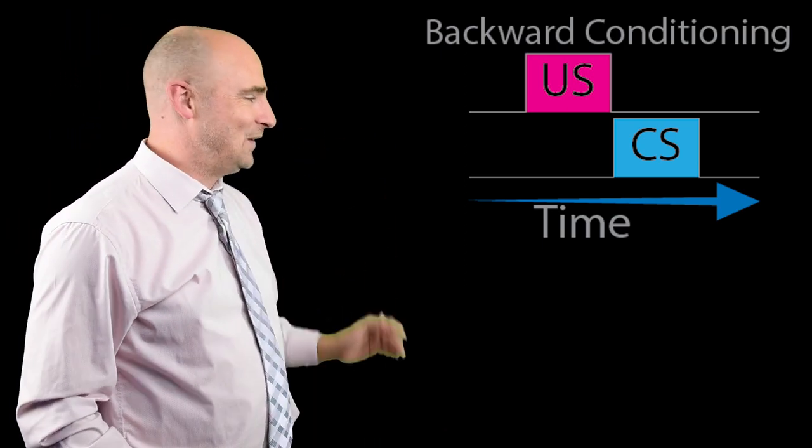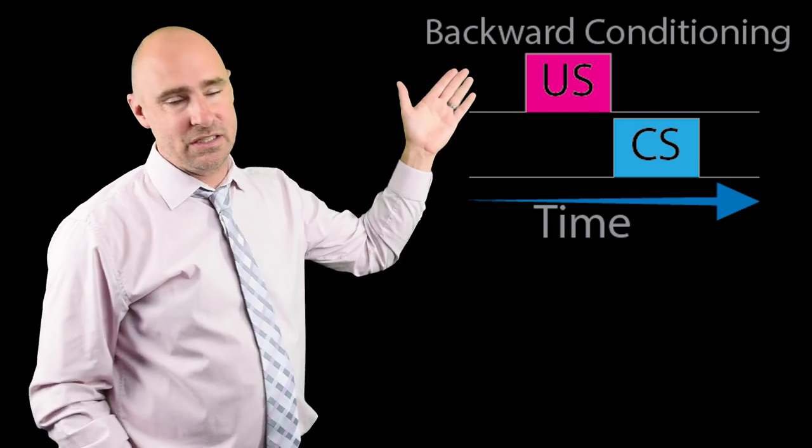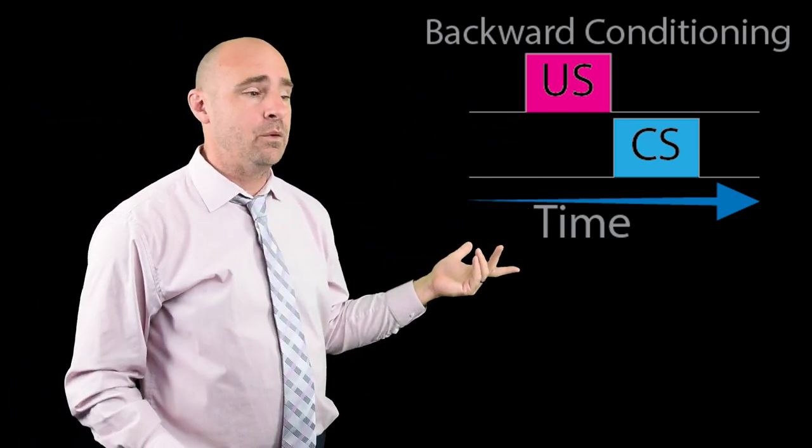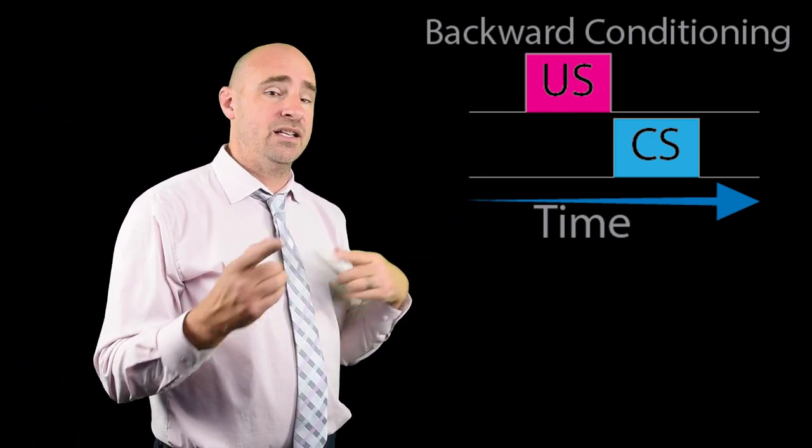We're going to turn the US on, and then we're going to turn it off, and then we're going to turn the CS on. So it's backward because we're putting that US first, which means we're not going to get any predictability between the CS and the US.